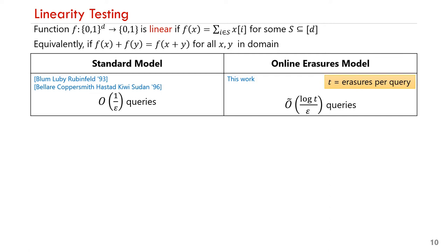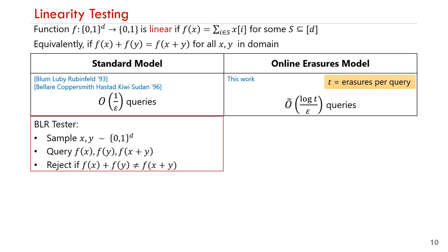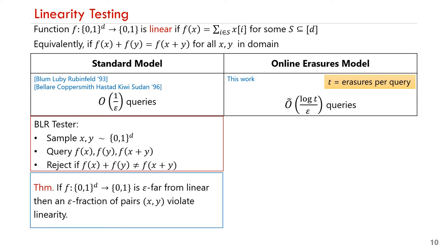In our model, we show that linearity testing can be done with O(log(t)/epsilon) queries, where t is the number of erasures per query that can be made by the adversary. The BLR tester is very simple: it repeats the following procedure. It samples x and y from the domain, queries f(x), f(y), and f(x+y), and rejects if f(x) + f(y) ≠ f(x+y), since this cannot happen for a linear function. In this case, we say that the pair (x, y) violates linearity. The analysis of the tester relies on the following crucial result: if a function f is epsilon-far from linear, then an epsilon fraction of the pairs (x, y) will violate linearity.